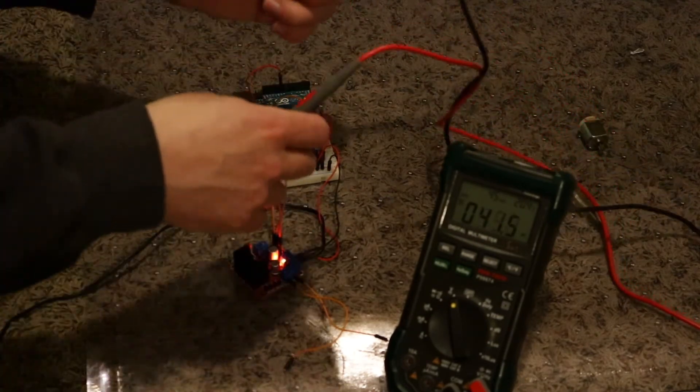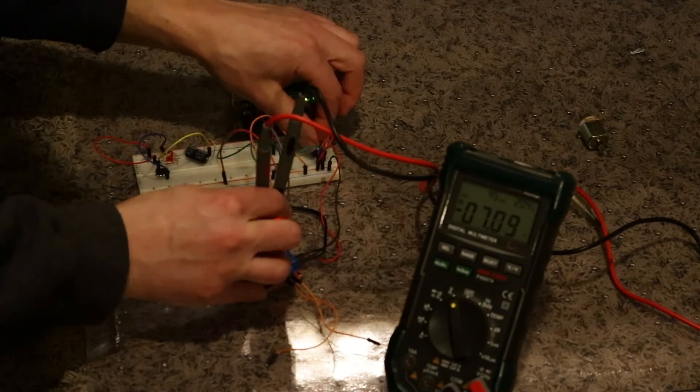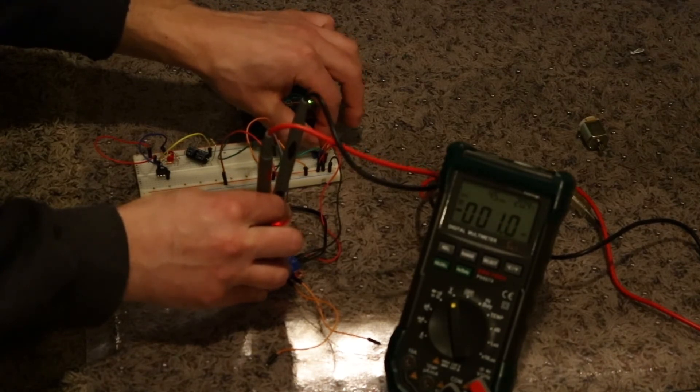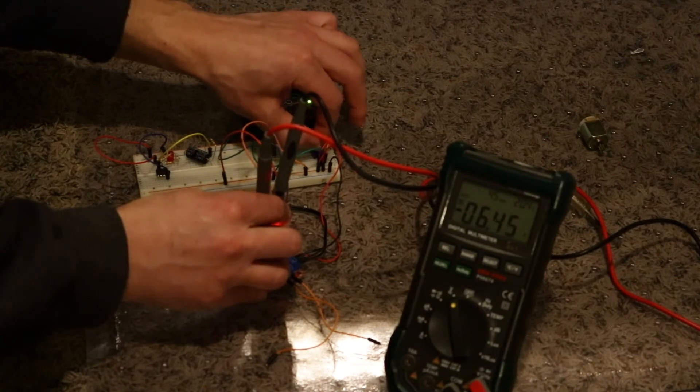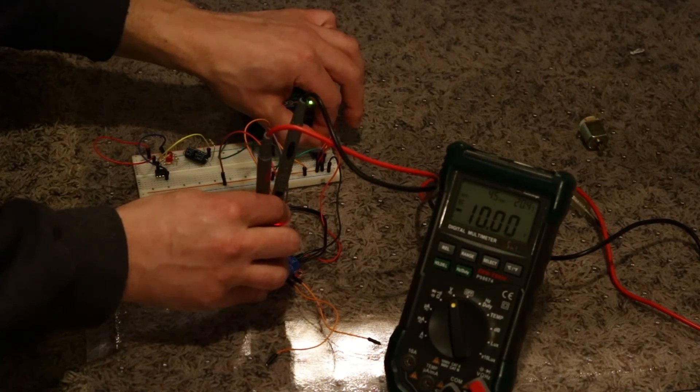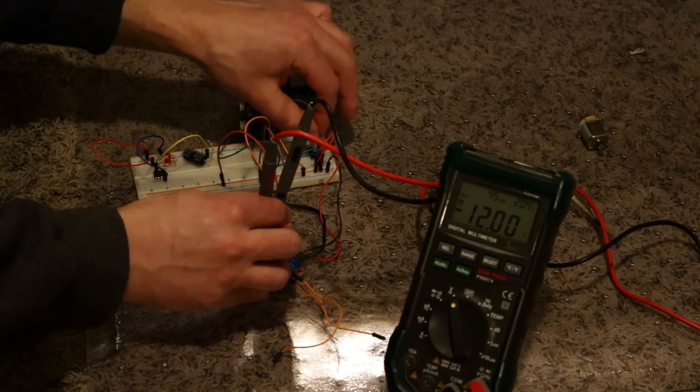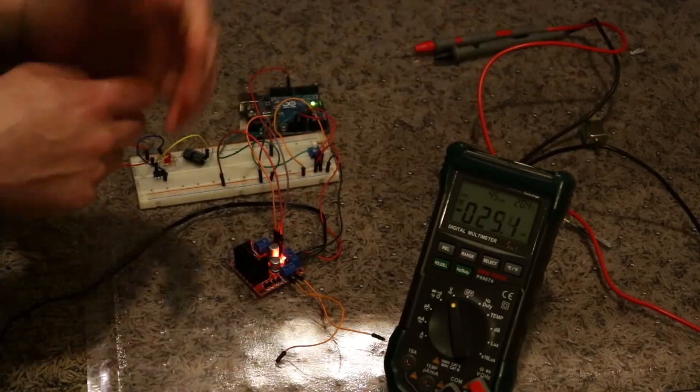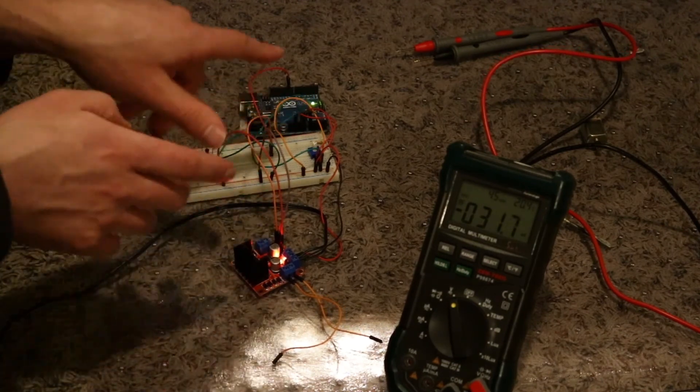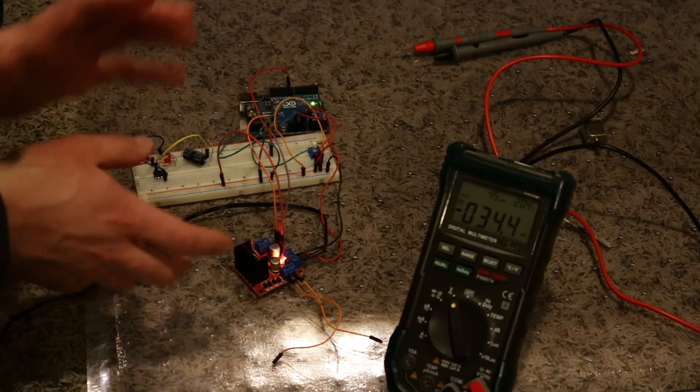So everything lights up. Go ahead and probe it. Alright, so I got 7 volts. Let me turn it down. Okay, so we got zero. Slowly turn it up. Nothing, nothing, nothing, six volts. And then it's nice and gradual like it should be from there all the way up to 12.